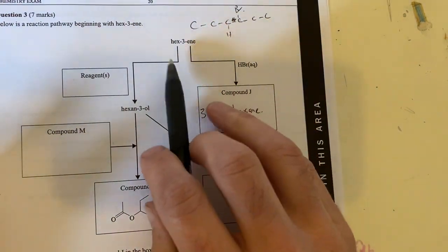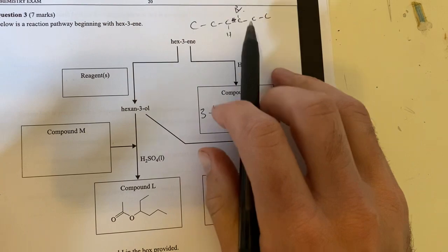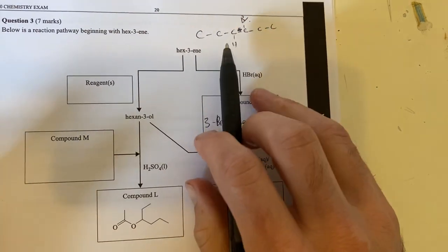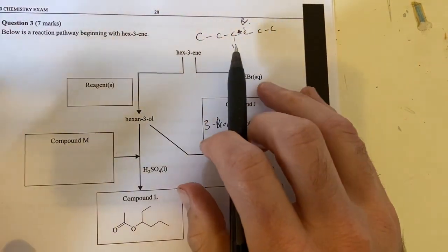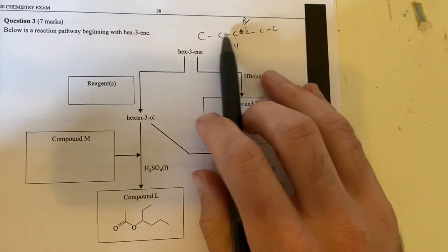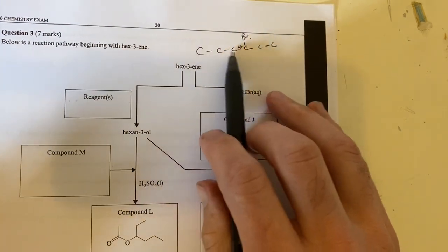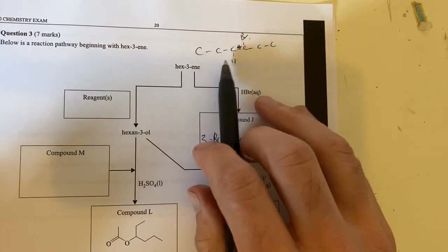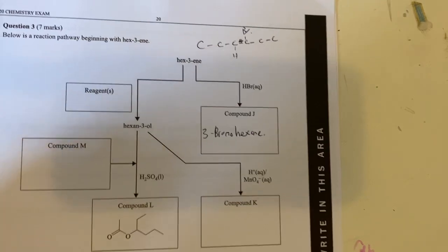Whenever doing these reaction pathways, I tend to like to do skeleton reactions - not skeletal drawings, but just skeleton reactions so I understand what's going to happen, showing me my backbones and the most important functional groups.